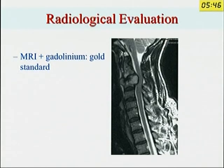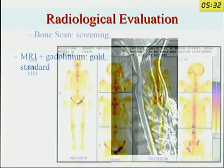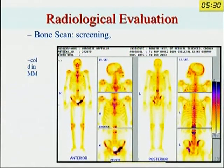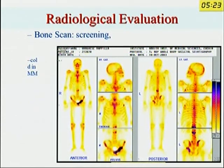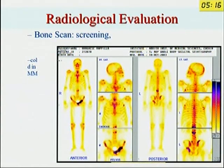If you want to see the spinal cord and neural elements, you have to go for MRI. MRI scan will show soft tissue tumors as well, and you need to do a contrast study. Bone scan is helpful for very minute or undetected metastases — you can see hot spots all over the spine. But only in multiple myeloma do you get a cold spot; all other metastases will be hot spots.